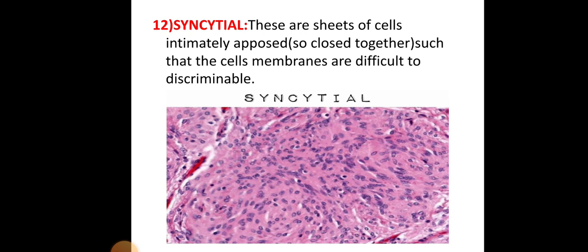In the syncytial pattern, sheets of cells are intimately opposed — arranged so closely together that the cell membranes are difficult to discriminate from each other.